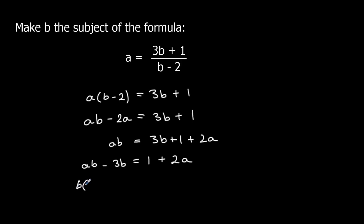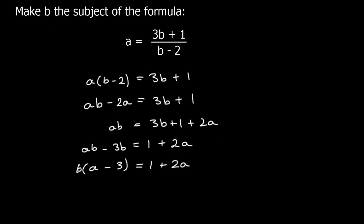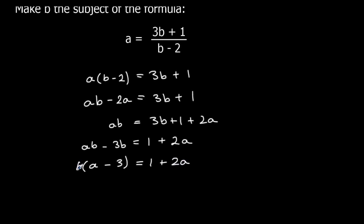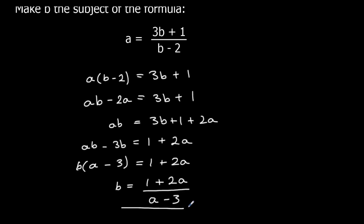'b' outside the bracket: b times a is ab, b times negative 3 is negative 3b. So I've got b times (a minus 3). To get rid of the times, divide both sides by (a minus 3), and that makes 'b' the subject of the formula.